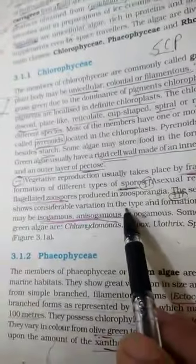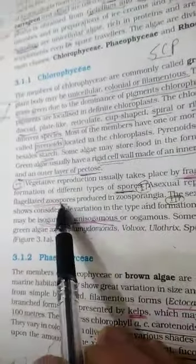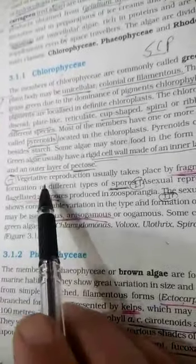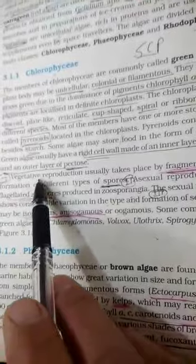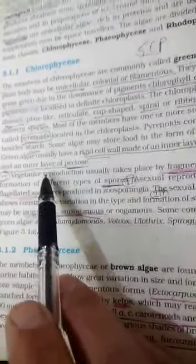Now it comes to reproduction in green algae. Green algae undergo all three types of reproduction, as we had discussed when we were discussing the general characteristics in the previous video.